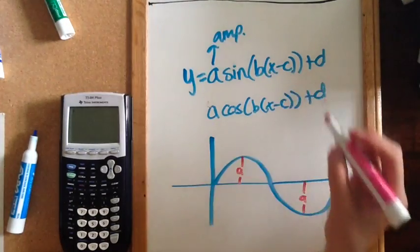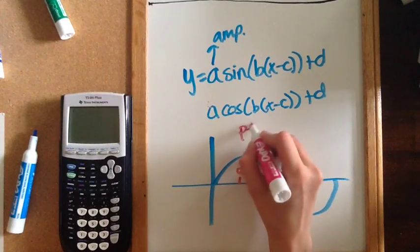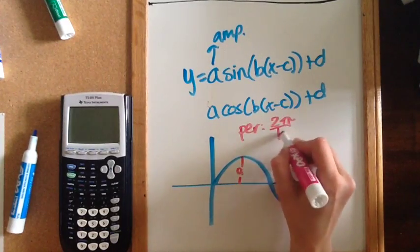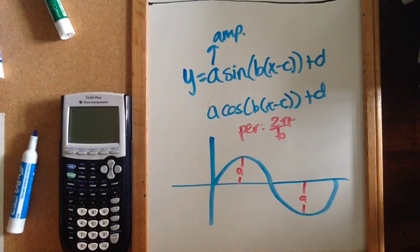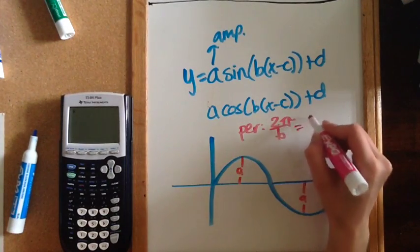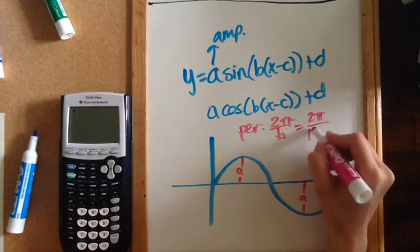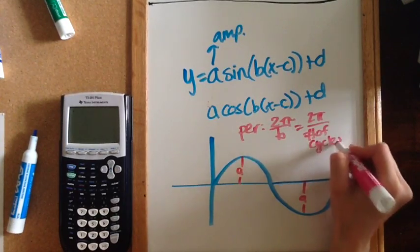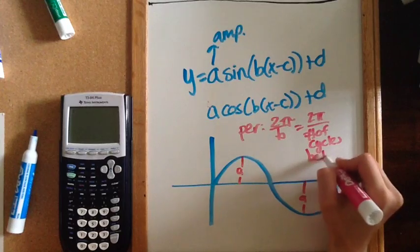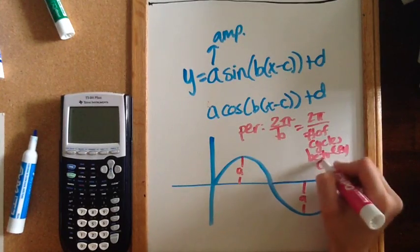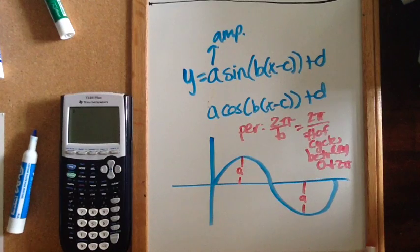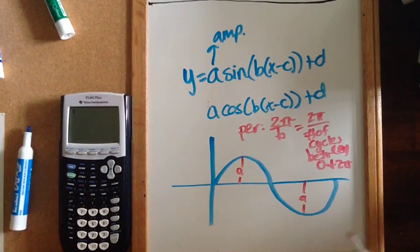The b value goes with your period change. The period is always 2 pi divided by b, with your b value being the number of cycles between 0 and 2 pi, which we'll talk about when we look at a graph.